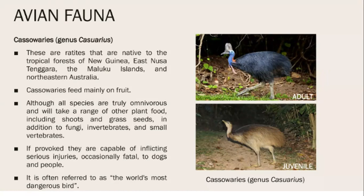The cassowary is found in northeastern Australia and totally feeds on fruit, although all species are truly omnivorous and will take a range of other plant food including shoots, grass seeds, fungi, invertebrates, and small vertebrates. The cassowary is considered the world's most dangerous bird.